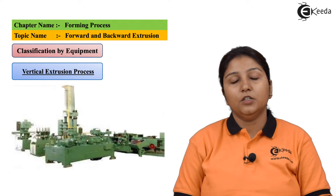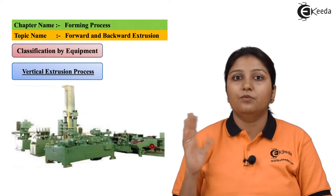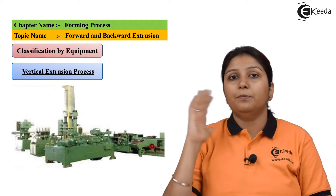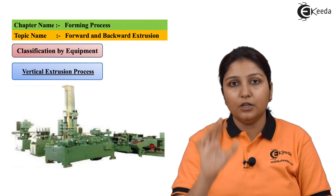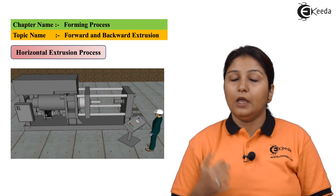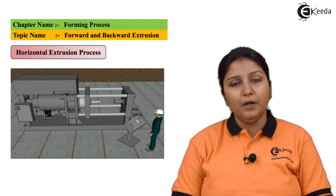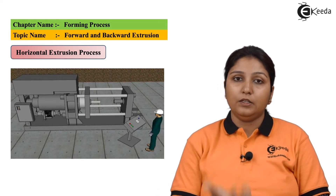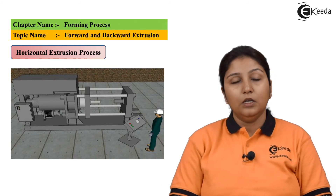This classification is according to the equipment. This is a vertical equipment where all the process takes place in the vertical direction according to the flow of gravity. And again, according to equipment, there is horizontal equipment where extrusion takes place horizontally.